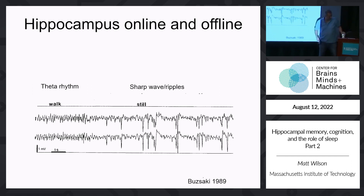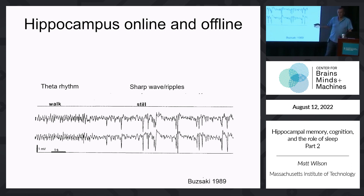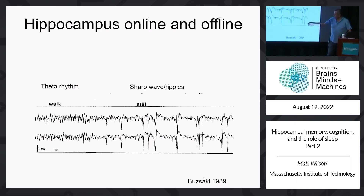So continuing with this — the idea is that you've got these different modes. There's the theta mode and the sharp wave ripple mode. Sharp wave ripple was a terminology that was coined by Yuri Buzsáki.